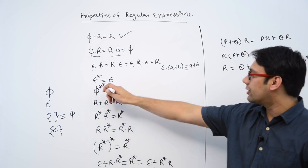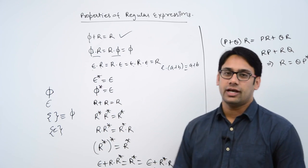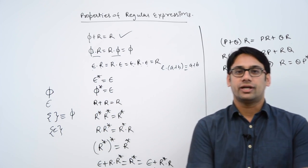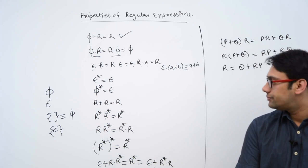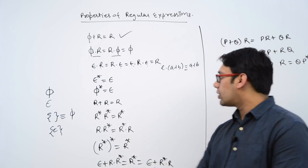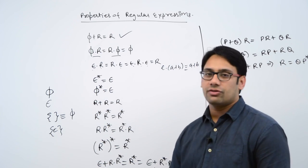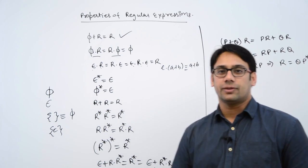When you take the Kleene closure of ε, then you get ε itself. When you take the Kleene closure of φ, then you get ε.